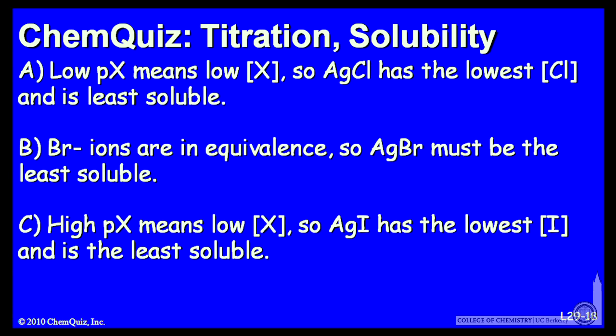Let's look at a possible explanation for each answer. A: a low pX means a low X concentration, so AgCl has the lowest Cl concentration and is the least soluble. B: bromide ions are at equivalence, so AgBr must be the least soluble. C: high pX means low X concentration, so AgI has the lowest I concentration and is the least soluble salt. Think about those three possible explanations and make a selection.